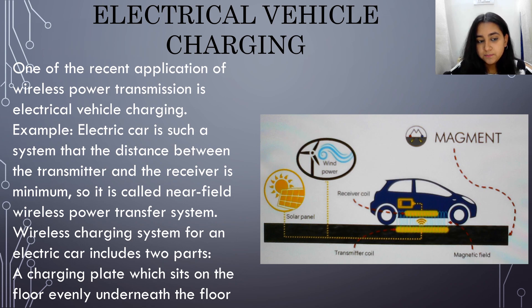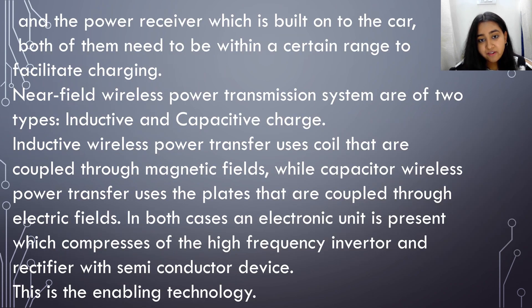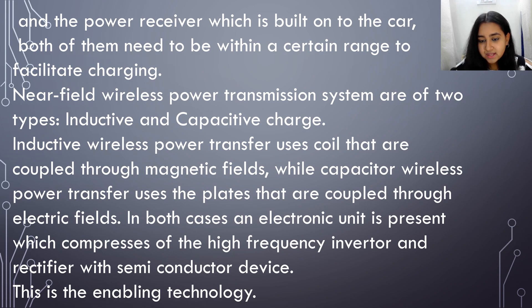One recent application of wireless power transmission is electric vehicle charging. In an electric car, the distance between the transmitter and receiver is minimum, so it is called a near field wireless power transmission system. The wireless charging system for an electric car includes two parts: a charging plate which sits on the floor underneath the car, and a power receiver built onto the car. Both need to be within a certain range to facilitate charging. Near field WPT systems are of two types: inductive and capacitive. Inductive wireless power transfer uses coils coupled through magnetic fields, while capacitive wireless power transfer uses plates coupled through electric fields. In both cases, an electronic unit comprising a high frequency inverter and rectifier with semiconductor devices is present — this is the enabling technology.